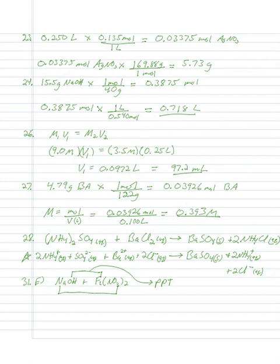Number thirty-two is about identifying strong acids and strong bases. We didn't really cover that as a learning objective, so don't worry about number thirty-two. Number thirty-three covers material we just did today, so you should be fine with that.